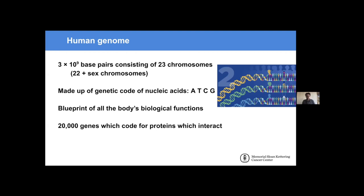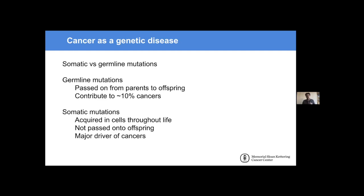We've got about 20,000 genes in our genome which code for proteins, and this is the ultimate piece of biological information. All of these proteins can interact with each other and perform different functions.